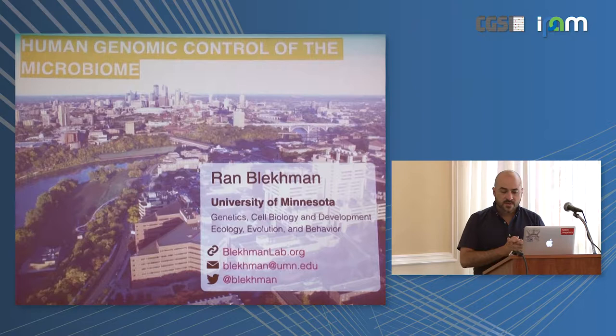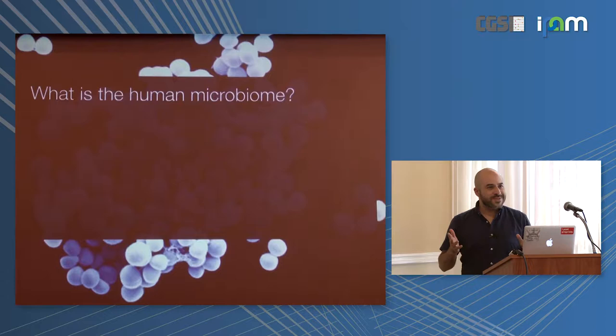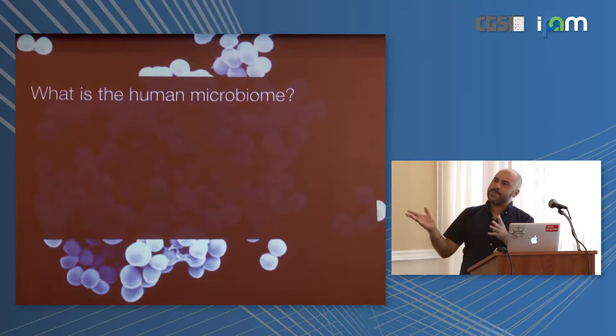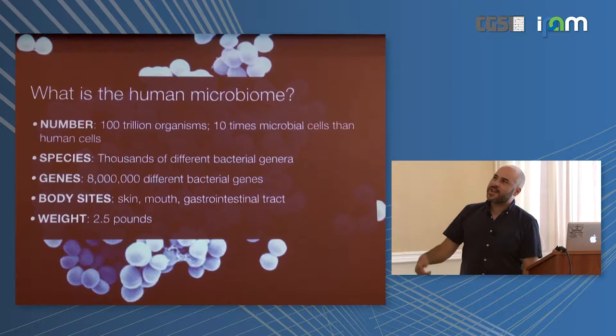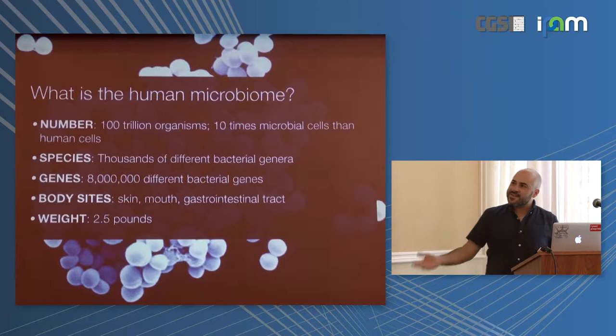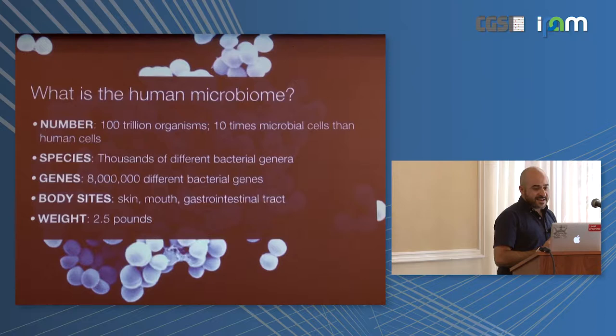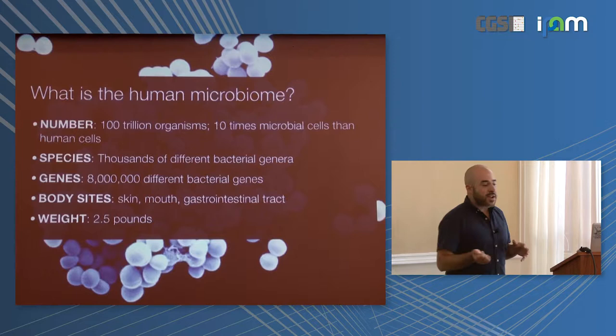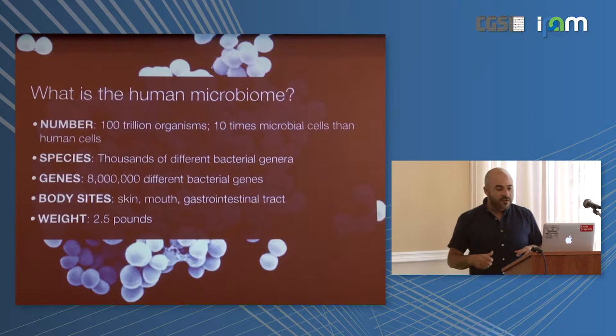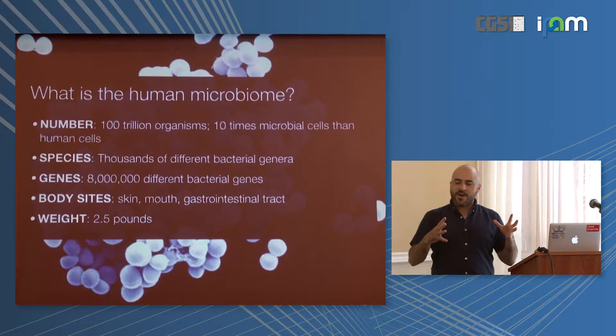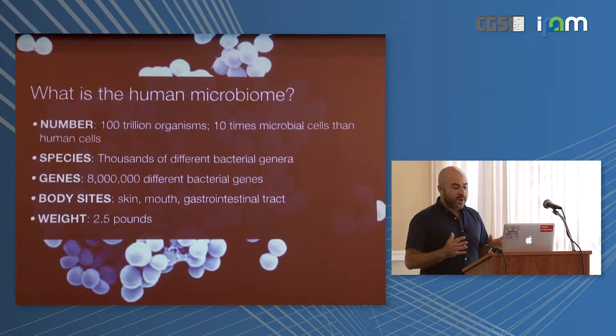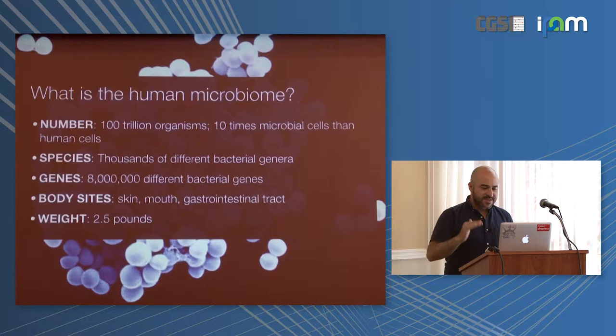Who here has heard about the human microbiome? Everyone — okay, so maybe just a one-minute introduction. There are trillions of organisms found in and on the human body, thousands of different bacterial species, and millions of different bacterial genes — far more than human genes. Microbes are found all over the body on any epithelial surface, with the vast majority in the GI tract. The microbiome collectively weighs about two and a half pounds — about the weight of the human brain.